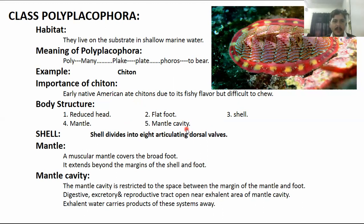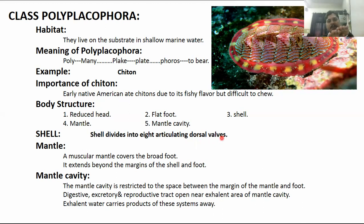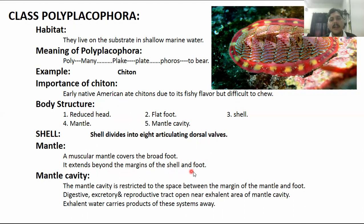We will study all these things one by one. First of all, the shell is divided into eight articulating dorsal valves. It is interlocked — one, two, three, through eight — this is why it is called Polyplacophora. The muscular mantle covers the broad foot part and extends beyond the margin of the shell and foot. The mantle cavity is the space between the margin of the mantle and foot.